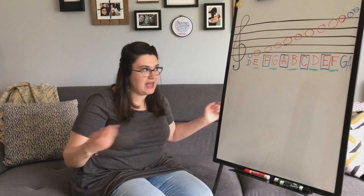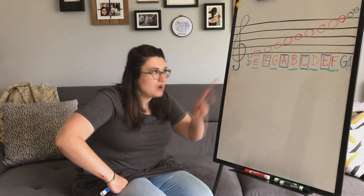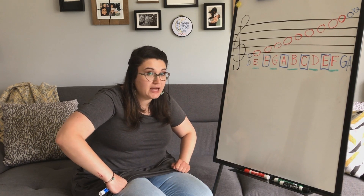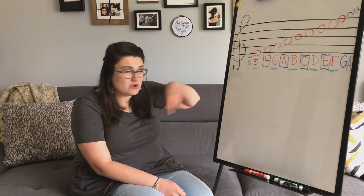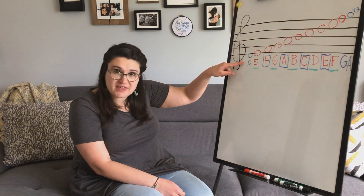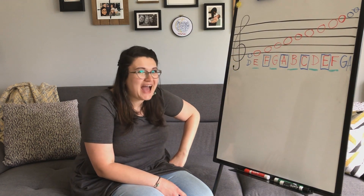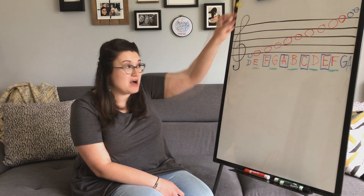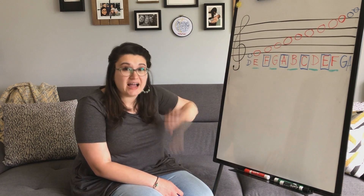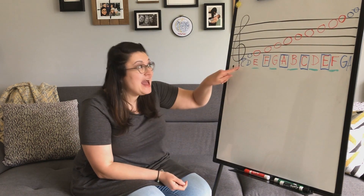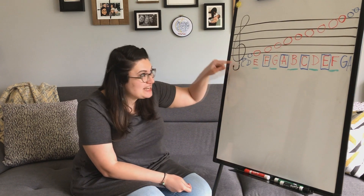What if we wanted to go even one more? Of course we can. What pitch is it going to be? What comes before D in the musical alphabet? C. So C is not going to be in that space — it has to be one lower than D. So we are going to add a line. Just like we added a line above, over here we're going to add a line below. There's our C.